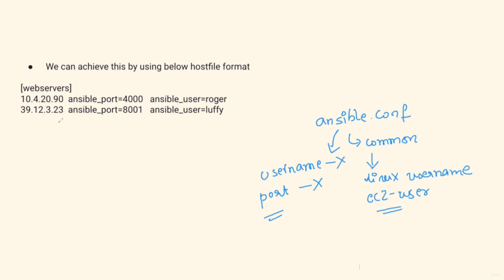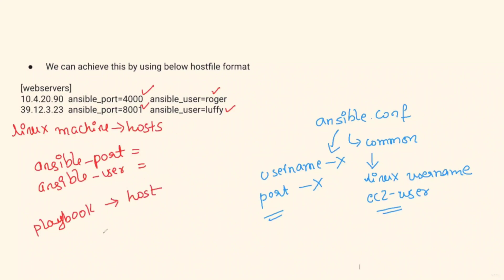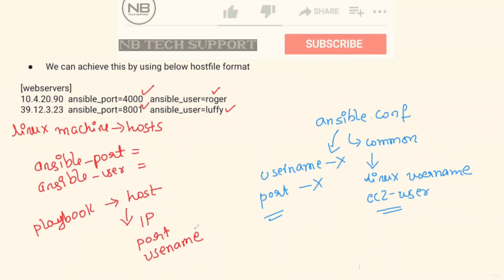So how do we handle this? I've already shared the solution as a format of the host file. When we mention these Linux machine details in our host file, we can add ansible_port — which is different, as you can observe — and we can also add ansible_user, which is also different. When you apply a playbook, it will fetch the host information, and this time along with the IP we also get the port and the username. Ansible will use these two parameters to log into these machines and run the playbook.